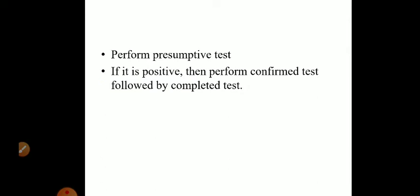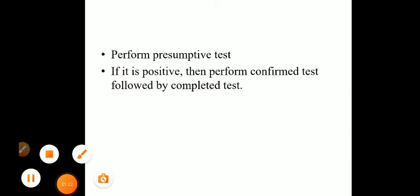So we have to perform the presumptive test; if it is positive, perform the confirmed test followed by the completed test, and confirm whether coliforms are present or absent. These are the different tests used for estimation of coliforms present in water — this is the multiple tube dilution technique. The same technique is used for sewage also. If you want to isolate other microorganisms other than coliforms, we can use selective media for Salmonella, Shigella, or fecal streptococci and check whether they are present in sewage. That is all about isolation of coliforms from sewage.